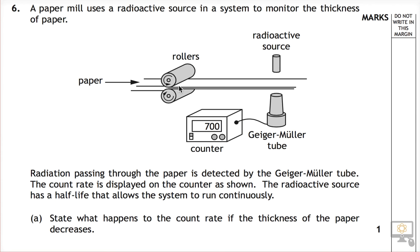You can see here the paper going through these rollers. It enters this region right here where there is a radioactive source and it's emitting particles which are traveling through the paper into this GM tube. Could be particles, could be gamma rays.